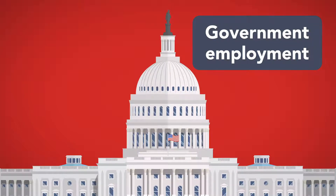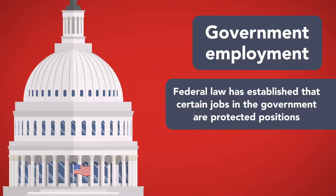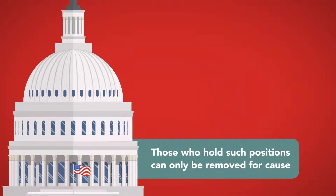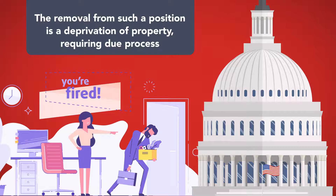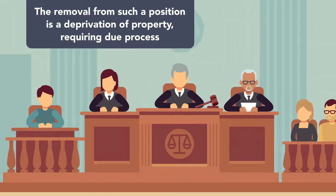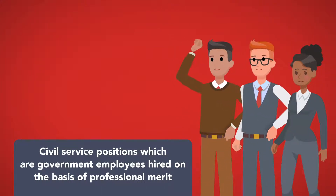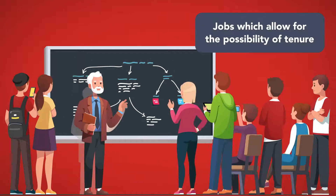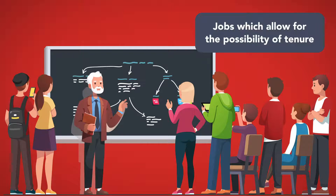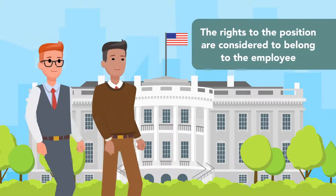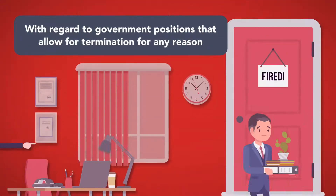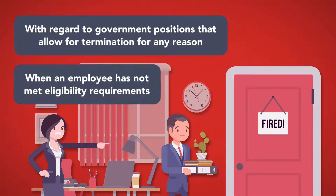Another important area in which deprivation of property will trigger due process protections arises in the context of government employment. Federal law has established that certain jobs in the government are protected positions, which means that those who hold such positions can only be removed for cause. This protection creates a property interest for the job holder, and the removal from such a position is a deprivation of property requiring due process. Examples include civil service positions hired on the basis of professional merit, and jobs which allow for the possibility of tenure, such as a teaching position at a state university. In both examples, continued employment is not dependent on the pure discretion of government supervisors. However, government positions that allow for termination for any reason, or when an employee has not met eligibility requirements, such as a teacher who has not earned tenure, due process protections would not apply.